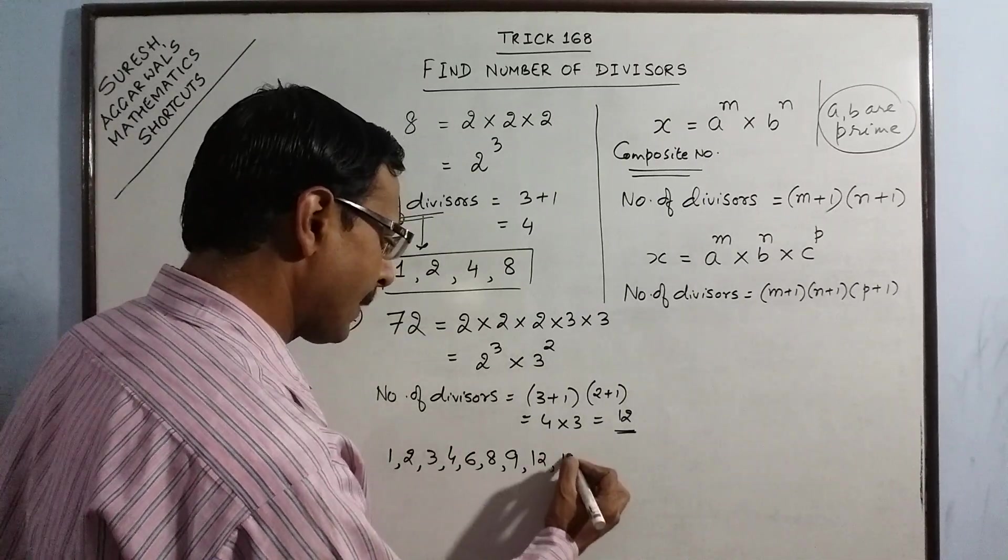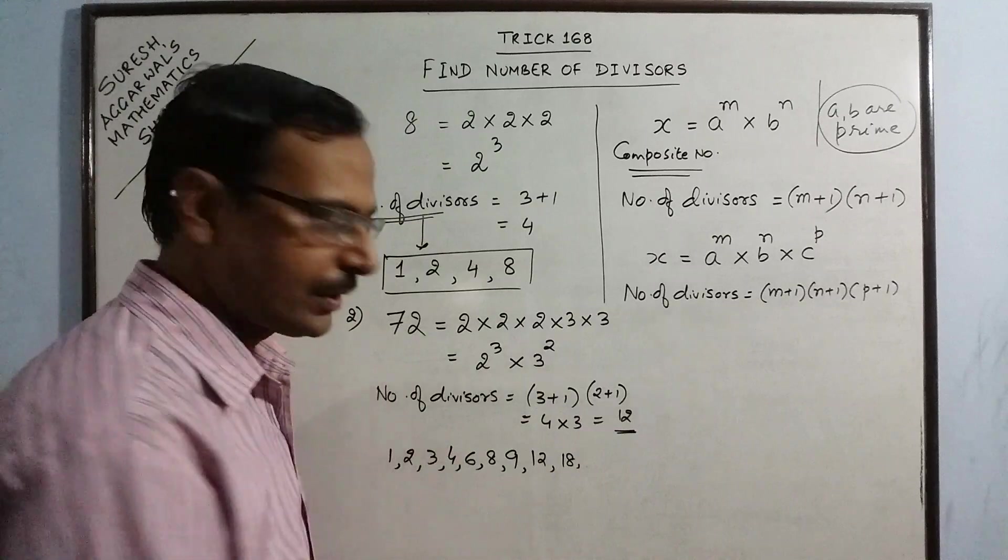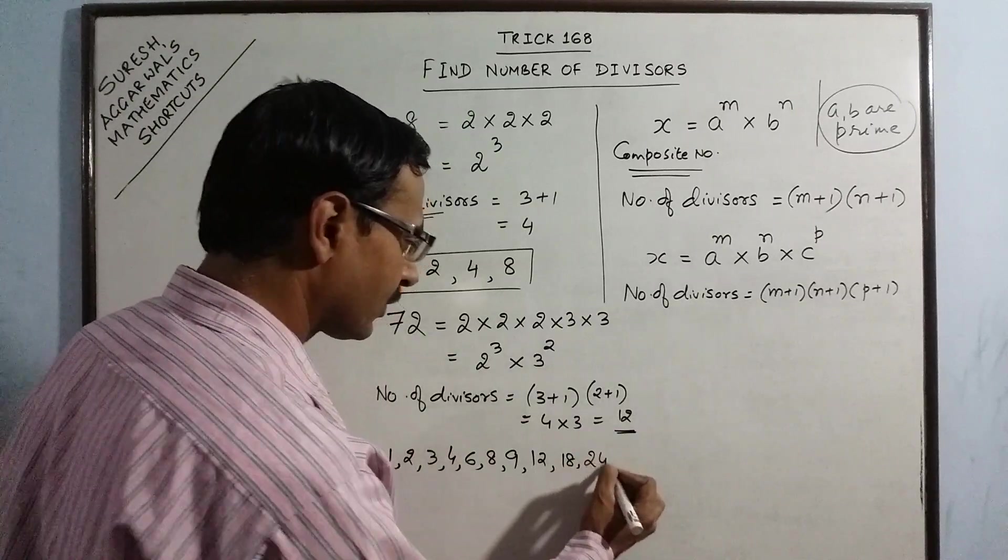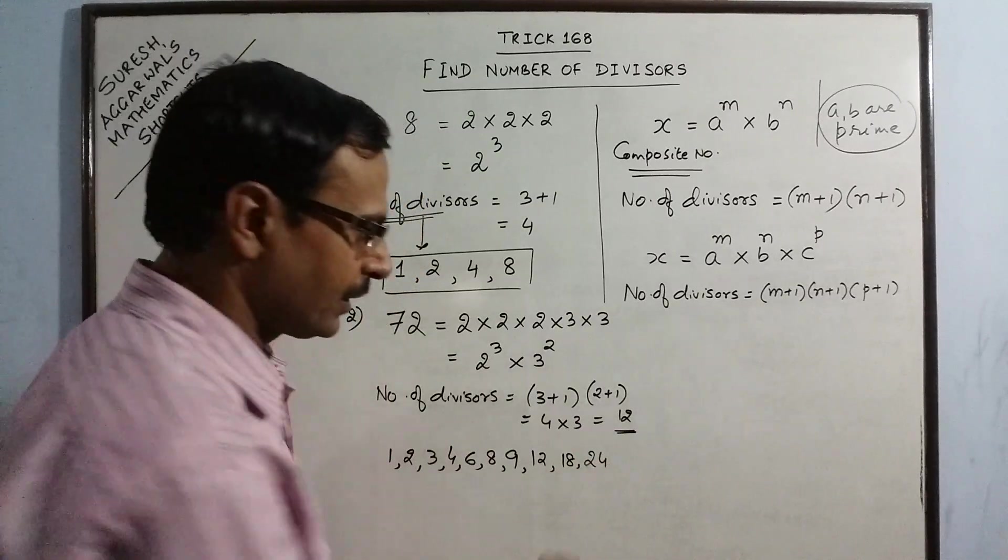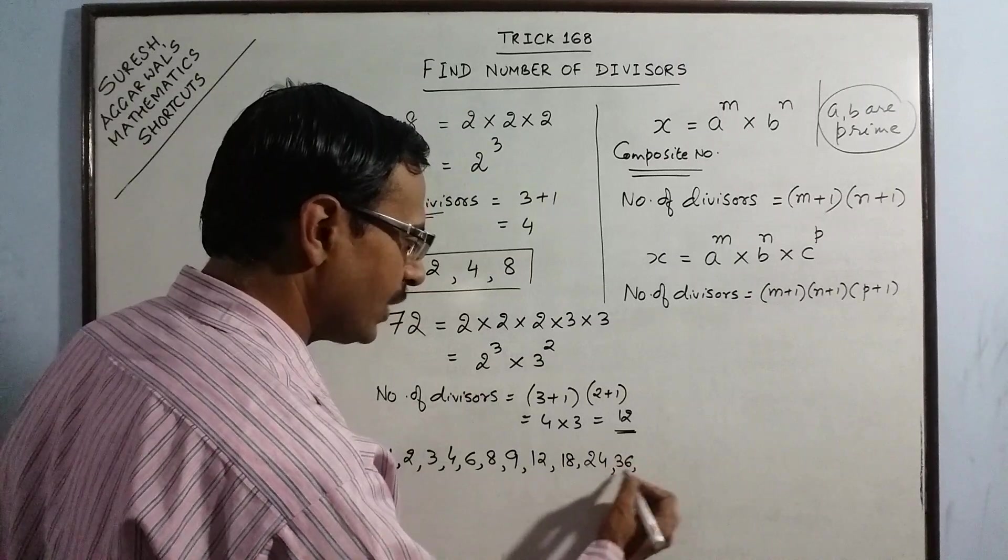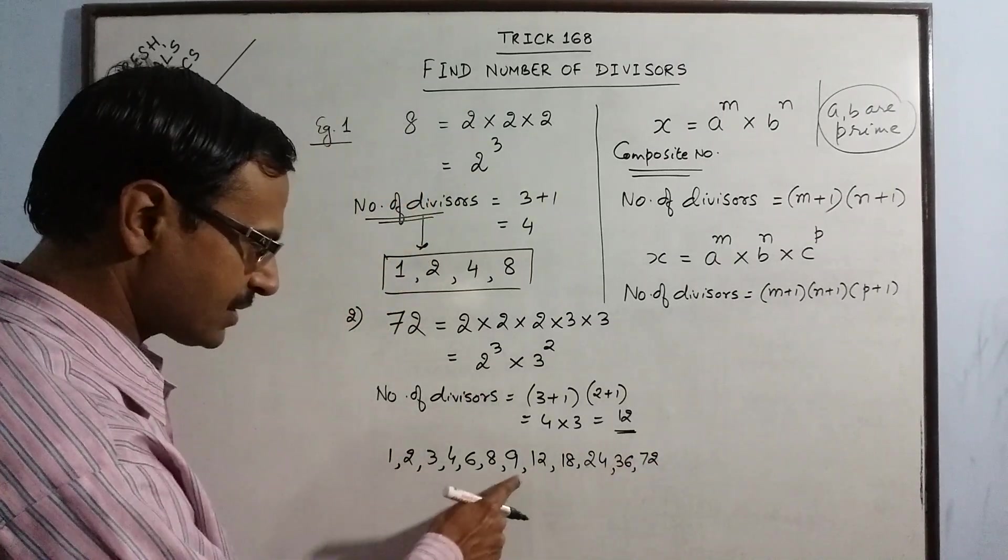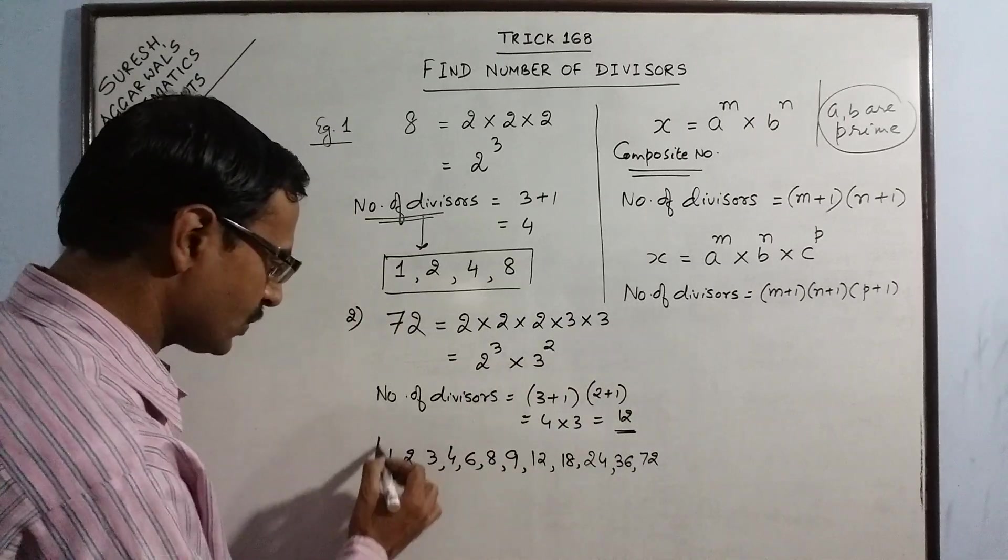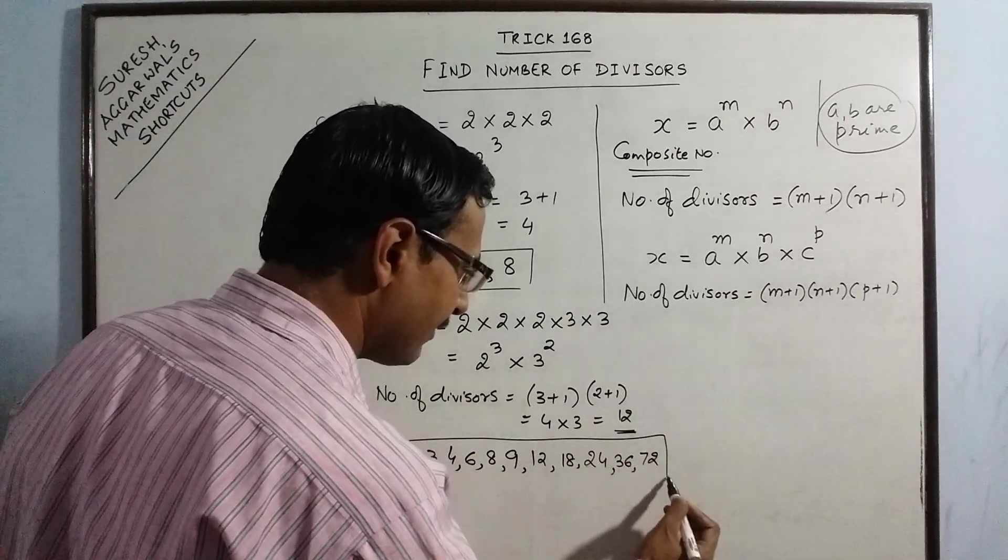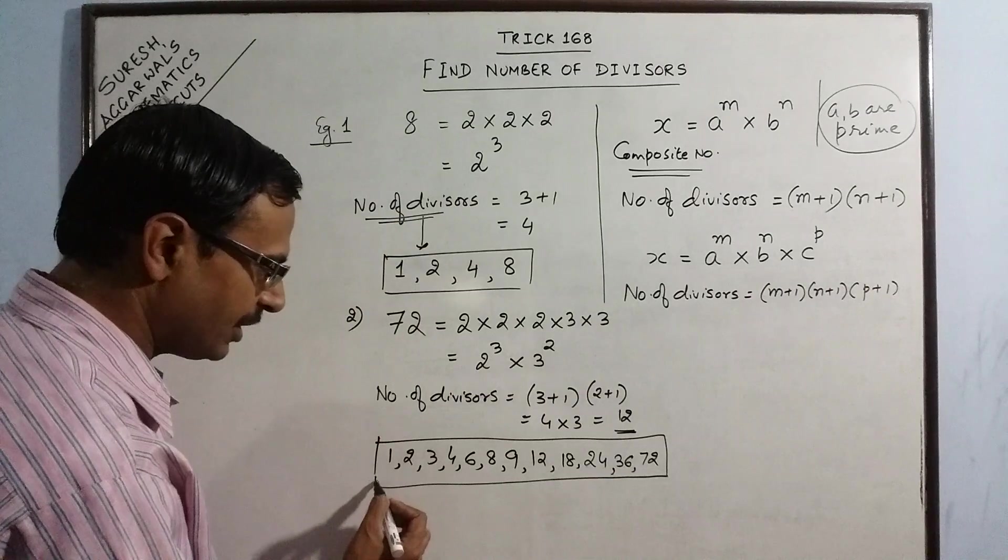Then 18, 4 eighteens are 72, then 24, 3 twenty-fours are 72, then 36, 2 thirty-sixes are 72 and 72, 1 seventy-two is 72. So if you count this 3, 3, 6, 3, 9 and 3, 12. So these are the 12 divisors of 72.